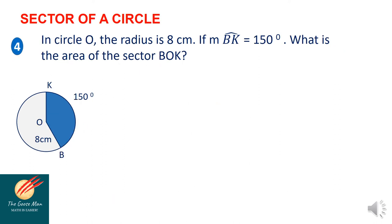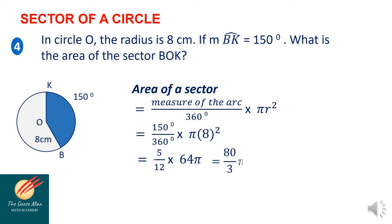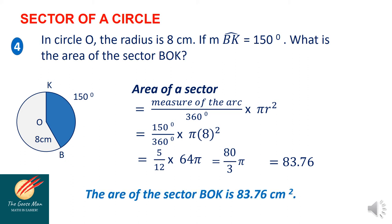Let's have another sector example. In circle O, the radius is 8 cm. If the measure of arc B-K is 150 degrees, what is the area of sector B-O-K? Using the formula: area equals measure of the arc over 360 times pi-R-squared. Substituting 150 degrees and radius 8: 8 times 8 is 64, so we have 150 over 360 times 64 pi. Dividing 150 and 360 by 30 gives 5 and 12 respectively. Simplifying further, we get 80 over 3 pi, which is approximately 83.76. Therefore, the area of sector B-O-K is 83.73 cm².